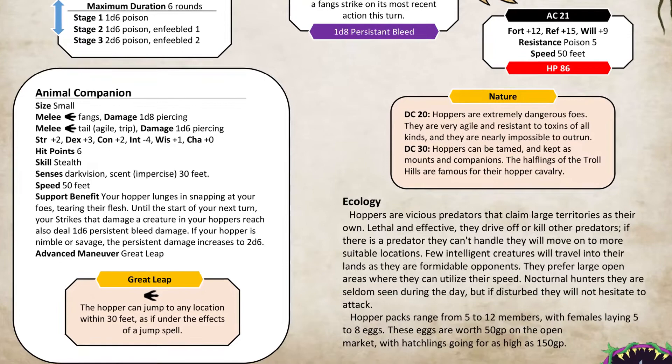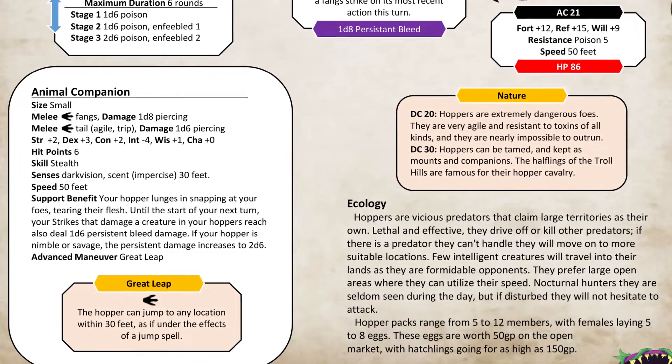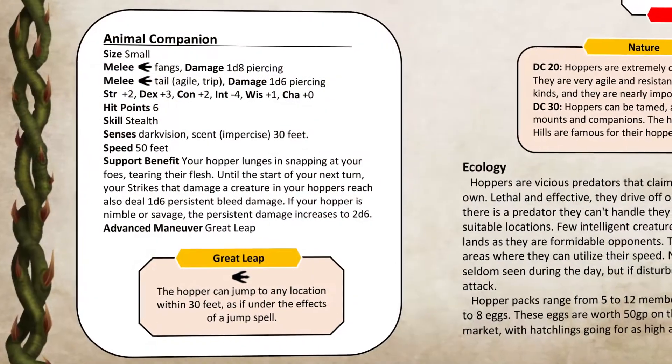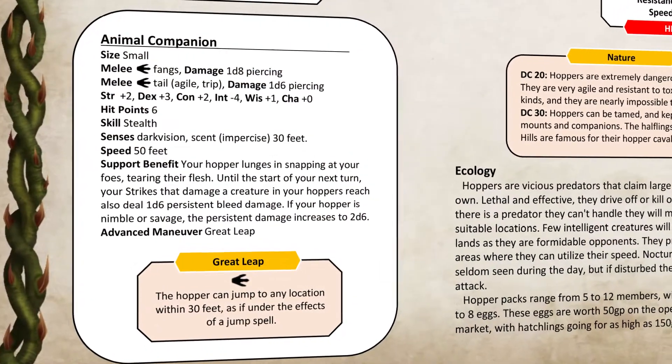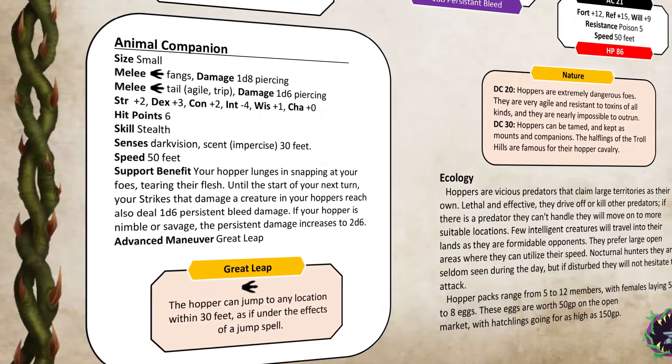Any special abilities that it might have are all listed right there and spelled out exactly how they work. If the creature has other options, such as for players, you can see here that this has animal companion stats. There is the size — small — and it lists the attacks just like you would any other normal animal companion. This is done as additional flavor if you want more interaction with the world and want to use the things found here.